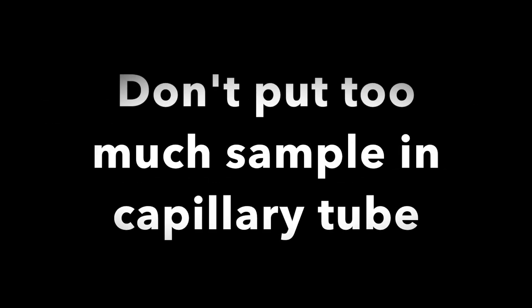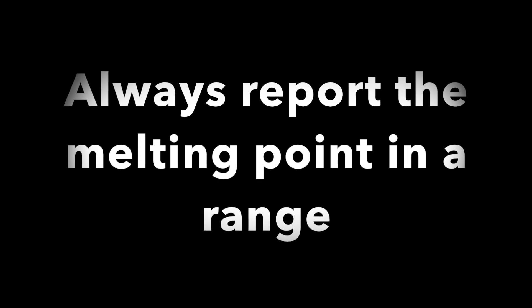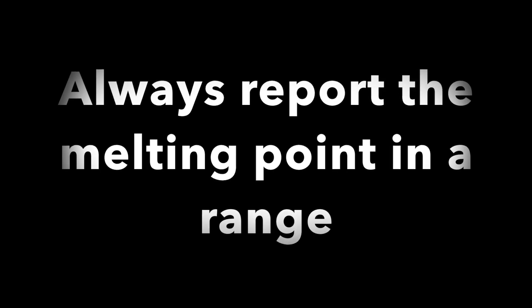Always write down values as soon as melting begins and as soon as melting ends so you don't forget them. Don't put too much sample in the capillary tube. The larger sample size will take longer to melt. Make sure the melt temp apparatus has cooled down from the previous user. Don't turn the ramp speed up too high or you won't be able to tell the temperature of the melting and your range will be wrong.